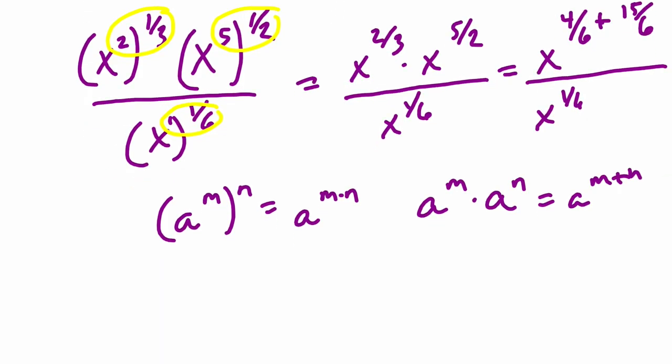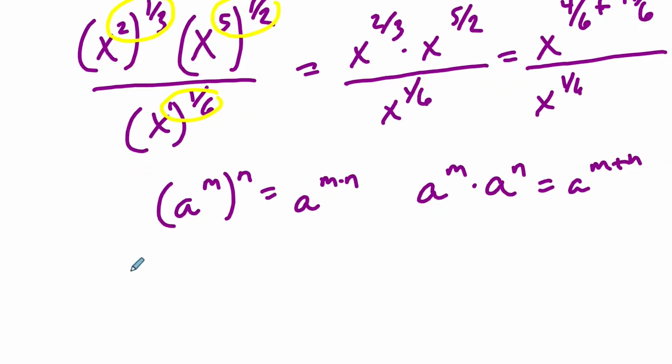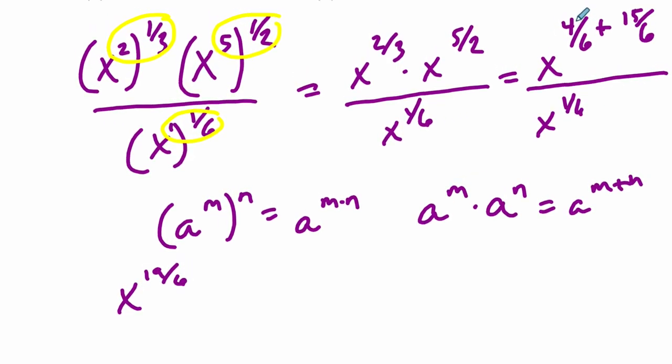Plus, I'm going to scale this up by a factor of 3 over 3, so it's 15 over 6. And then we still divide by x to the 1 sixth. All right, what do we do now with this? I'm going to write over here now. We have x to the 19 sixth. All I did was add those two fractions, 4 and 15 is 19 over 6.